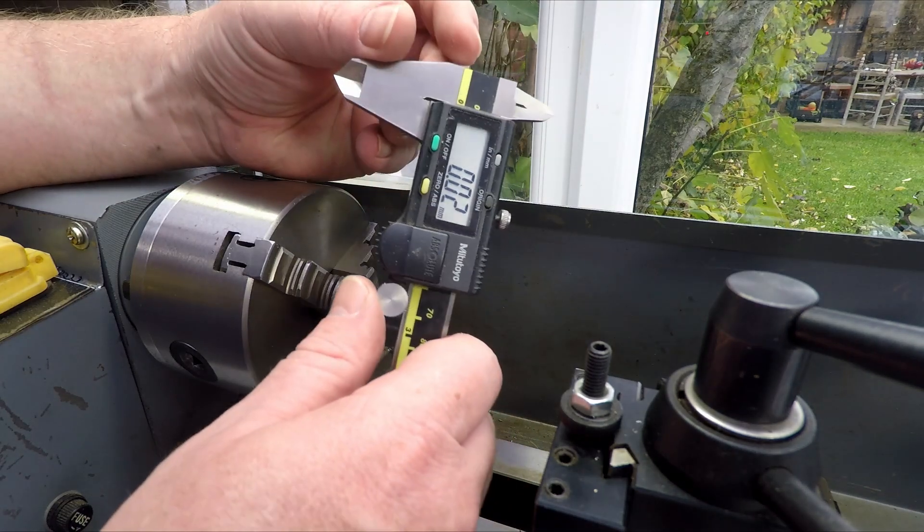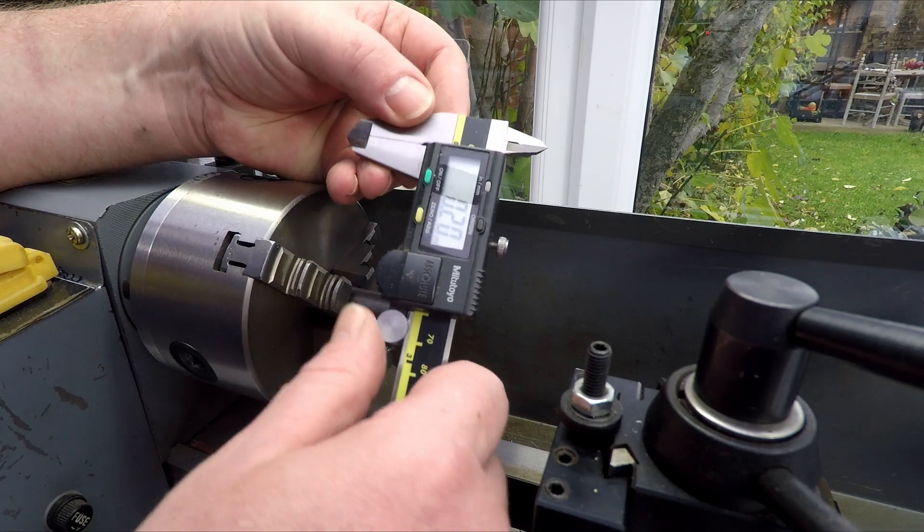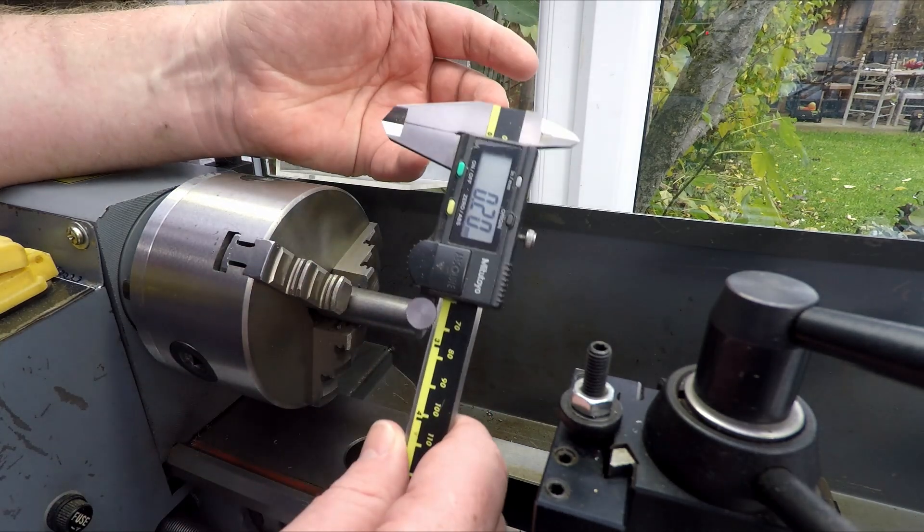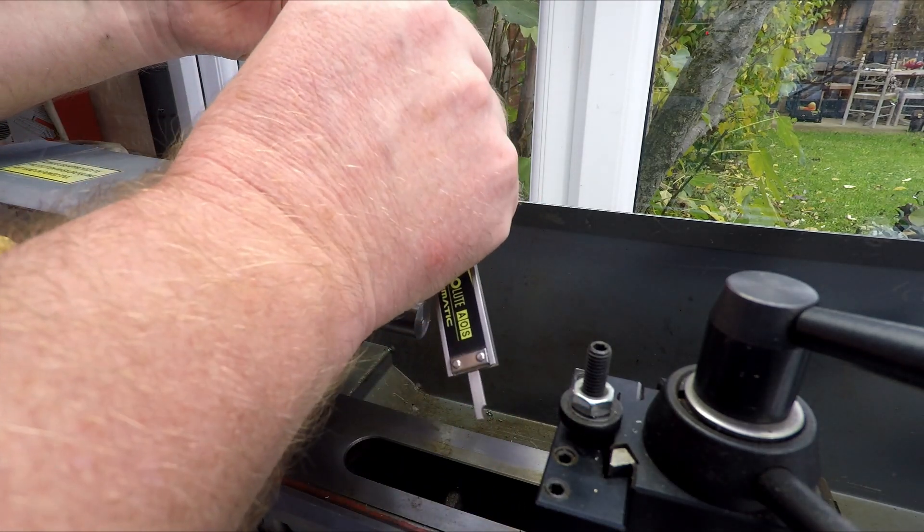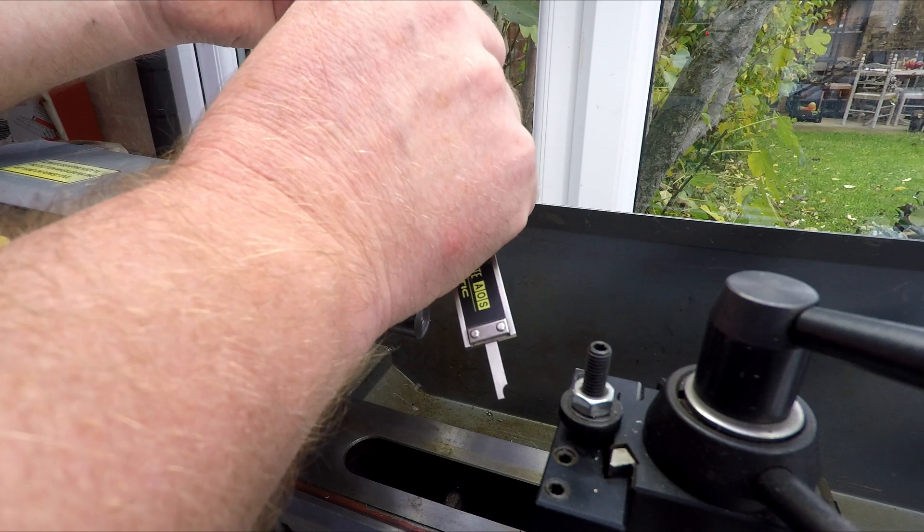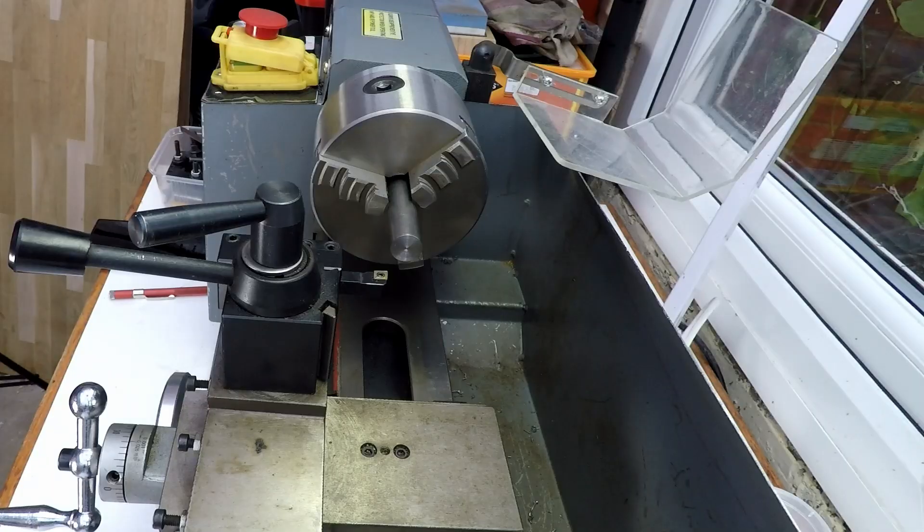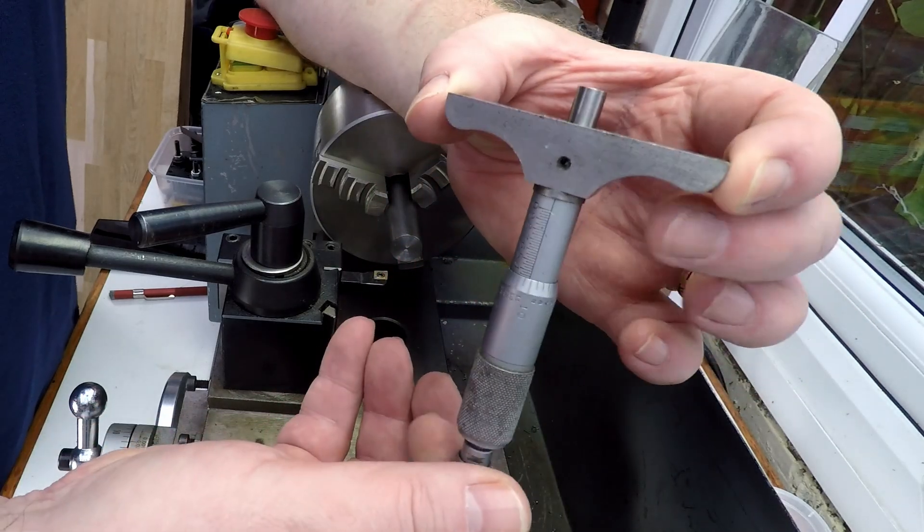To do that, we're going to use a caliper. This is a digital caliper—you could use a dial caliper or vernier caliper, whatever you have. If you're doing lathe work, you'll have one of these. This one has a depth feature, which most have, and that's what we're going to use to center our tool. If you don't have calipers but do have a depth mic, you could use that instead—it'll work absolutely fine.